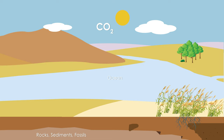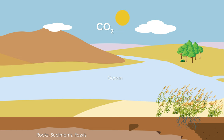We call the locations where carbon is stored "sinks," and the process of storing carbon is termed carbon sequestration. Anything that releases carbon is called a source. For example, plants take in carbon and store it — a sink — but when they die, some of this carbon can be released back into the atmosphere as greenhouse gases, a source.